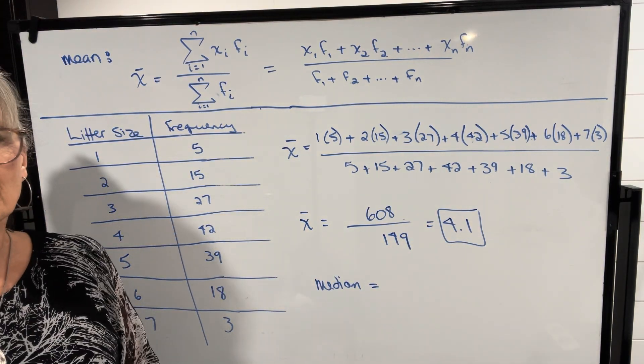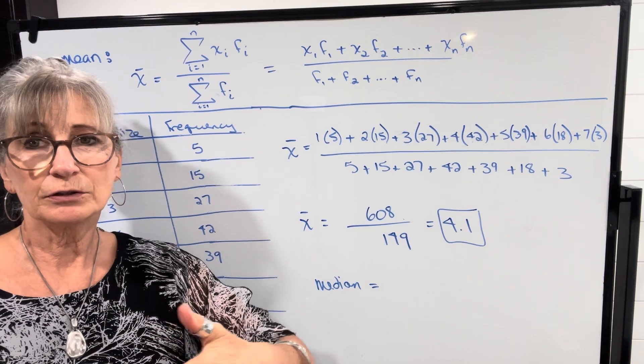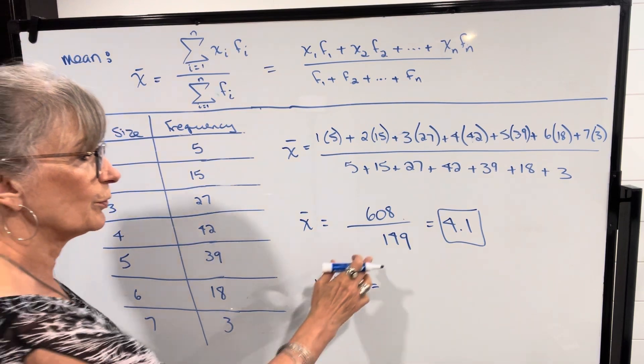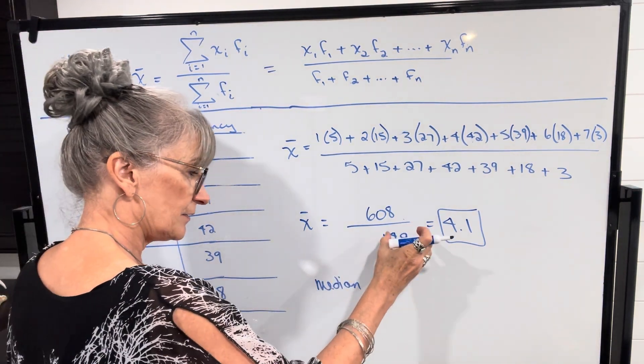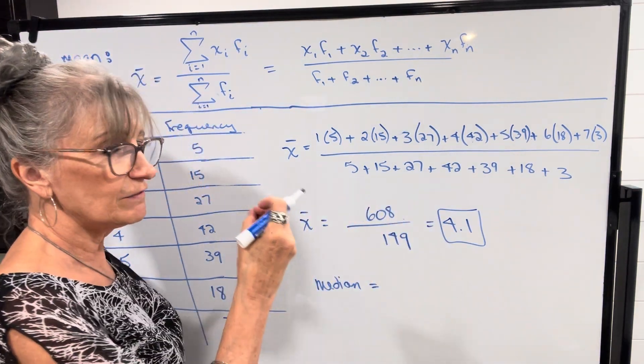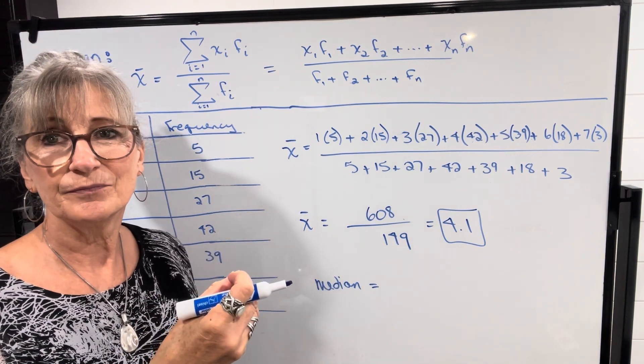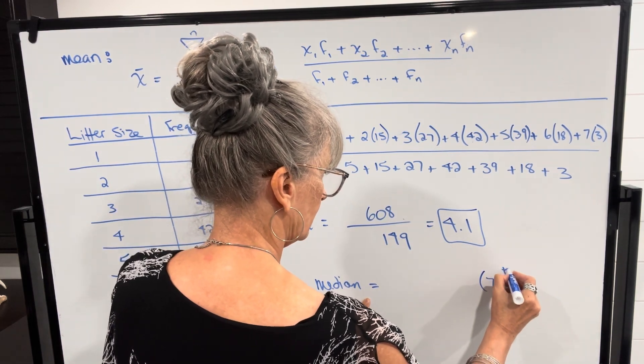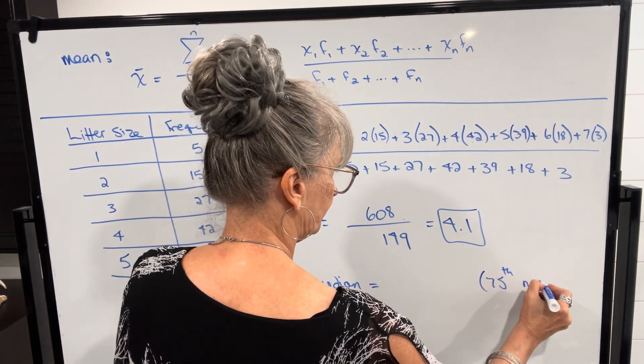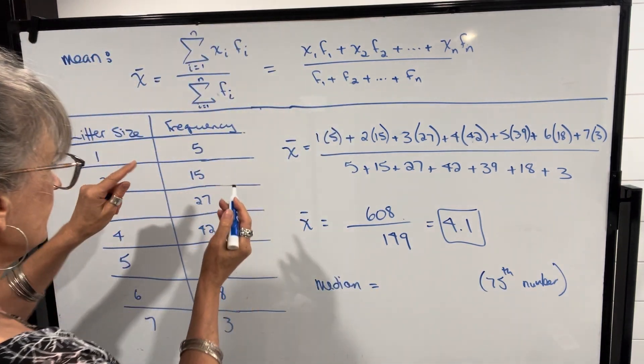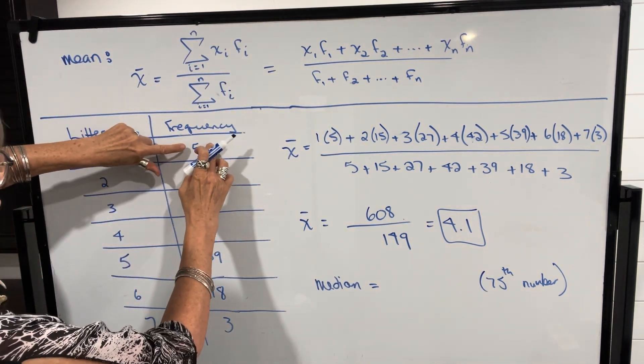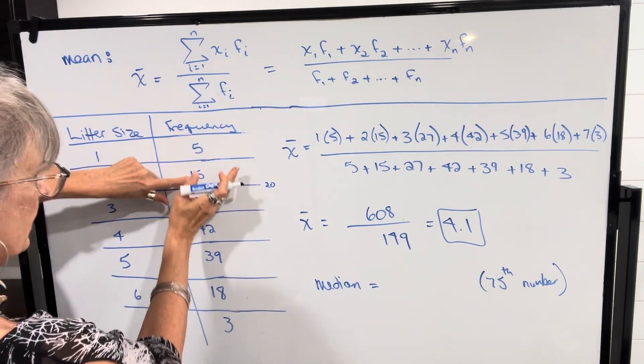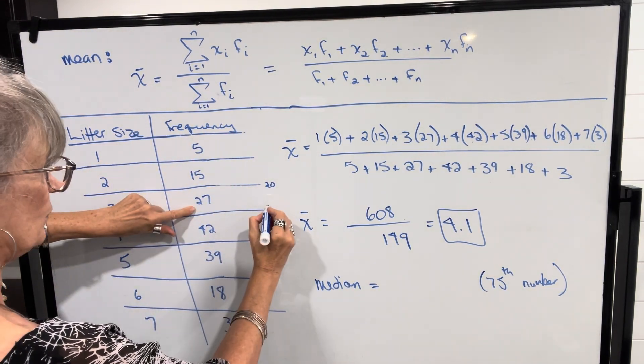Now it's a little tricky finding the median because we're not arranging all of our numbers in order. So if we have 149 pieces of data, the 75th piece, once it's in order, would be the one in the middle. So what we're looking for is the 75th number. Easiest way probably to do that is just start totaling. So we've got 5 plus 15 is 20, so my first 20 numbers there, and then 27 would be 47 here, so my 47th number is in this category.